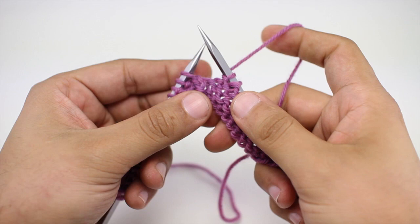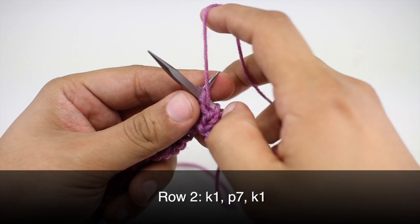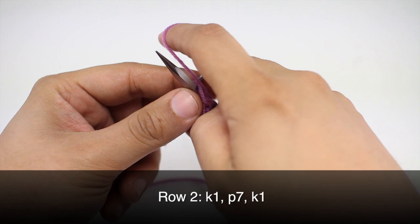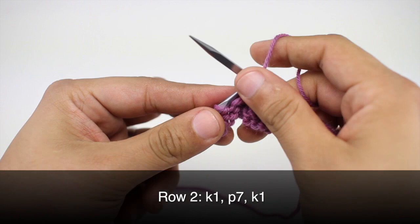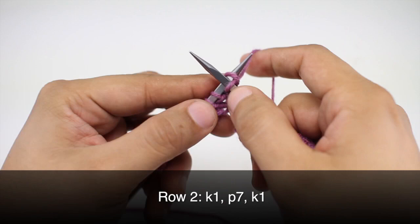Row two: we're going to begin by knitting one. Then we're going to purl seven. And then we'll finish up by knitting one.